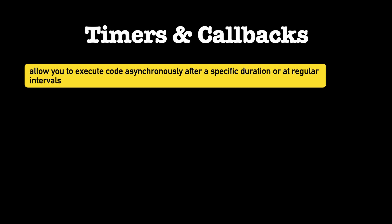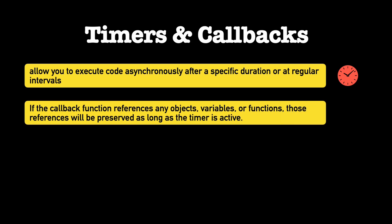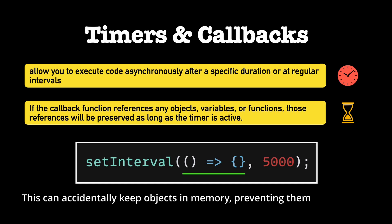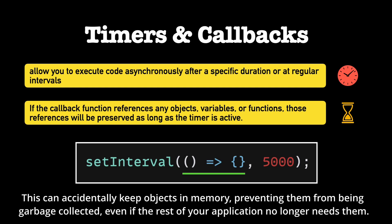JavaScript provides setTimeout and setInterval functions that allow you to execute code asynchronously after a specific duration or at regular intervals respectively. When you use these functions, you often pass a callback function. If the callback function references any objects, variables, or functions, those references will be preserved as long as the timer is active. This can accidentally keep objects in memory, preventing them from being garbage collected even if the rest of your application no longer needs them.